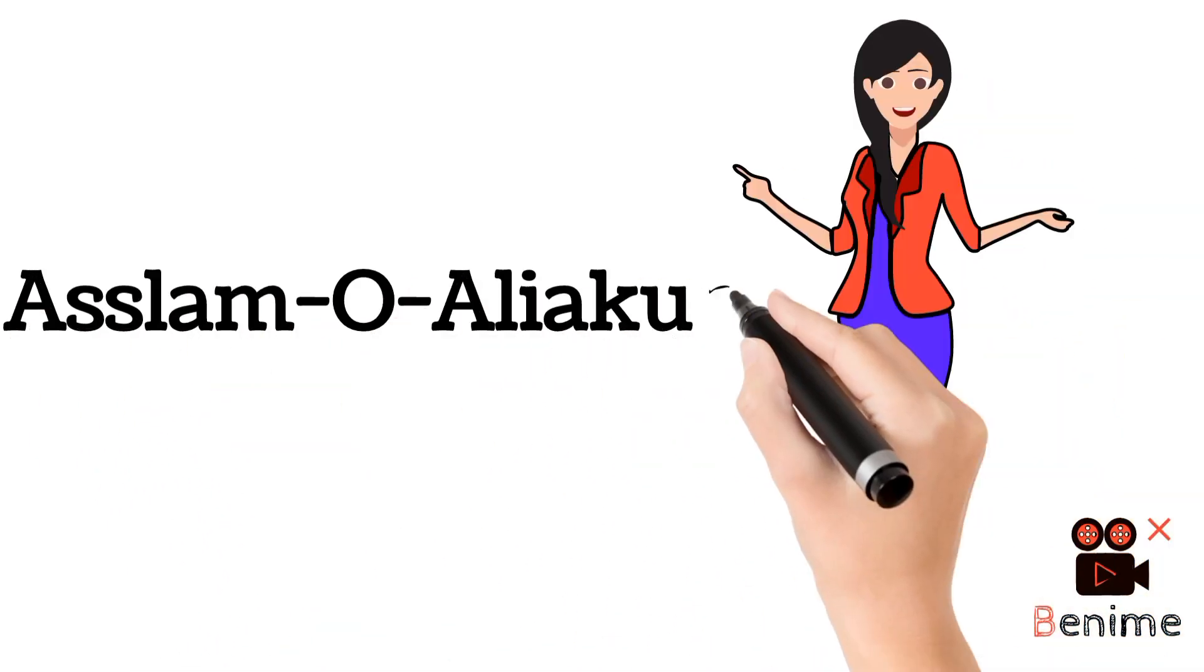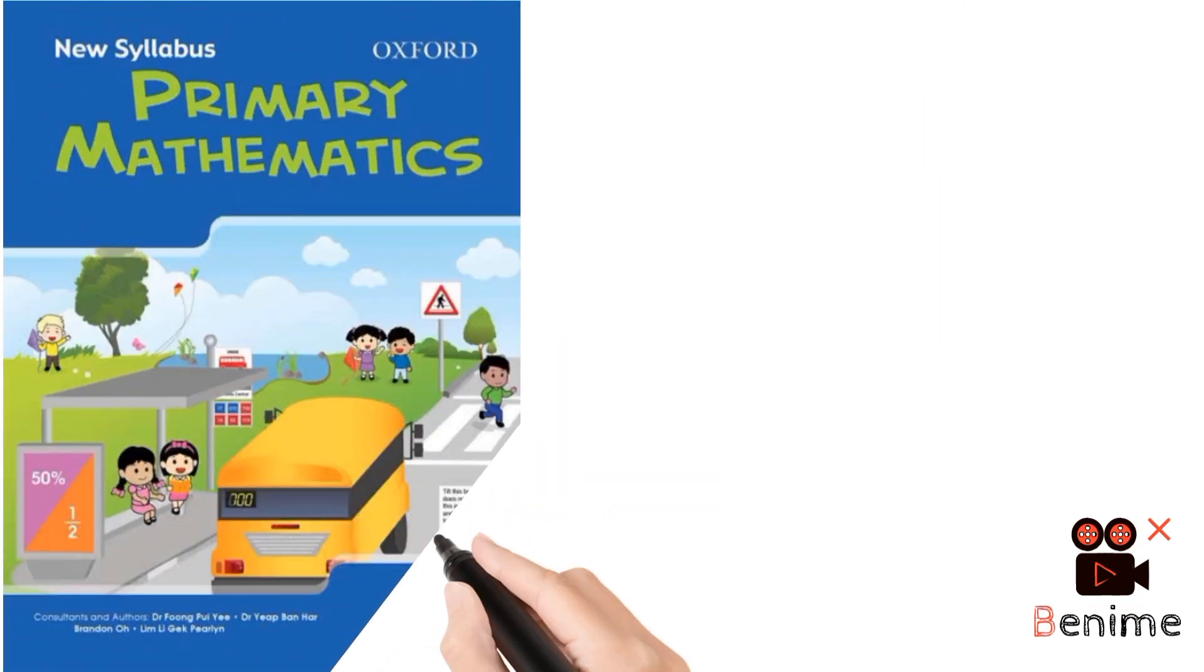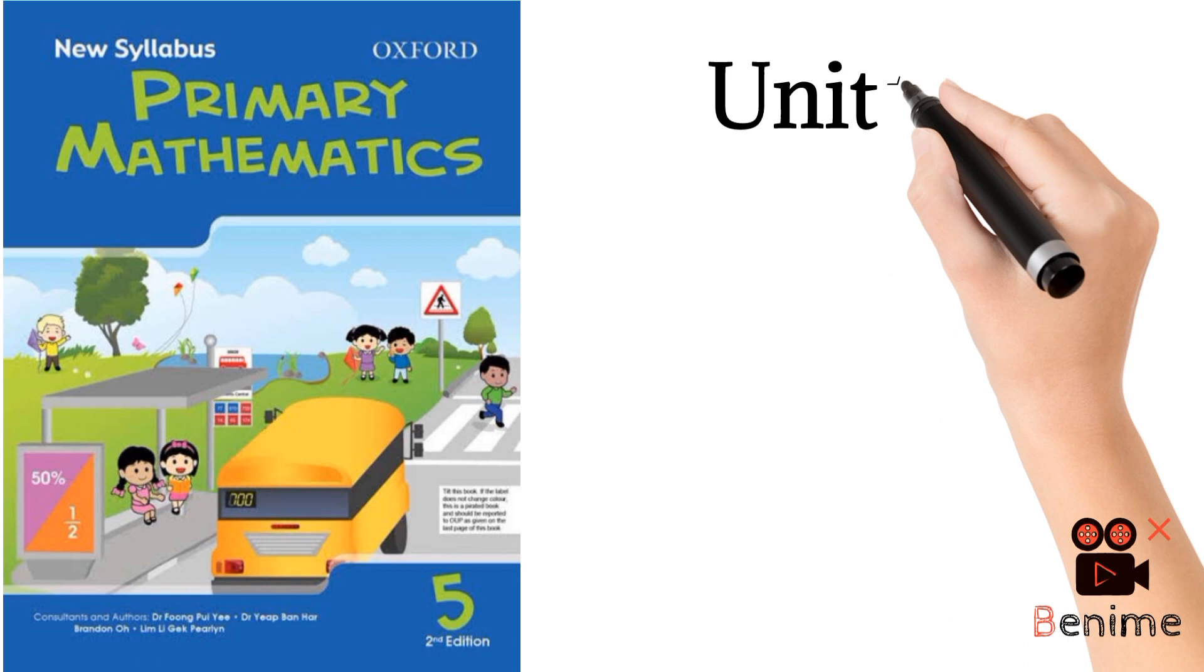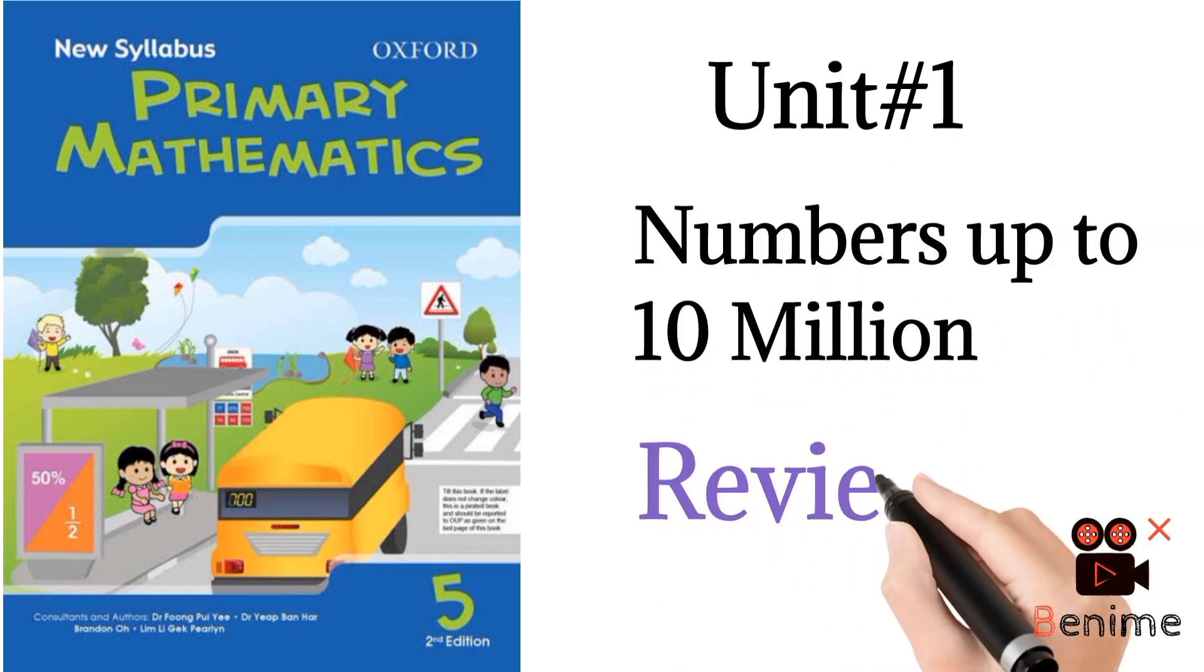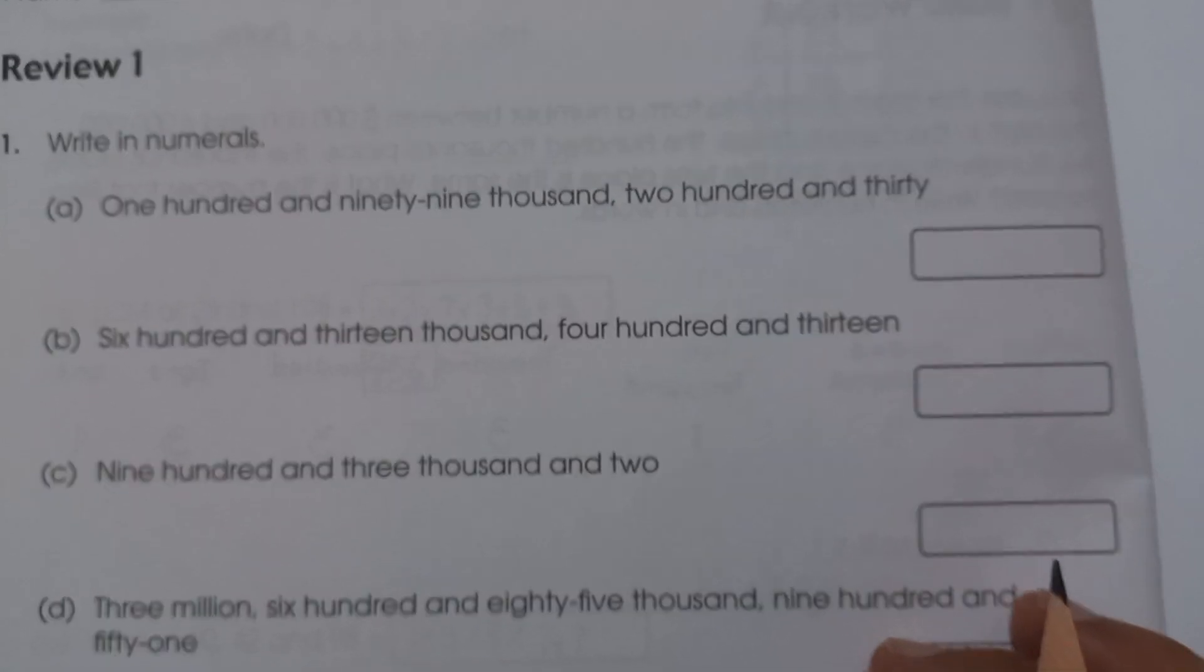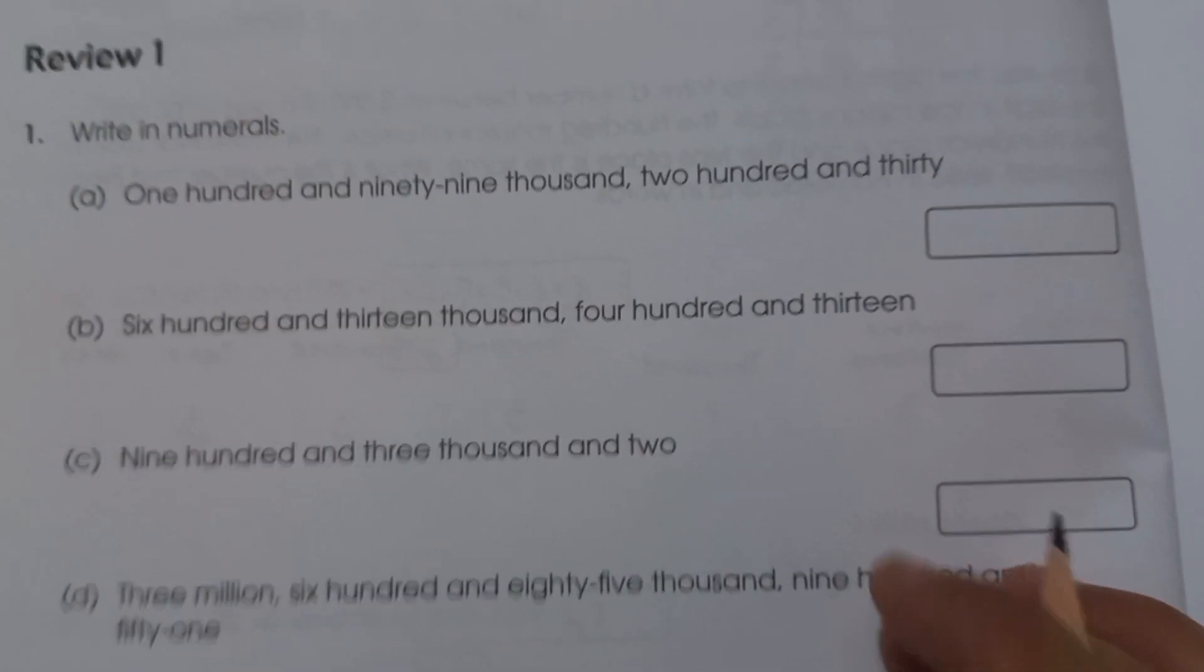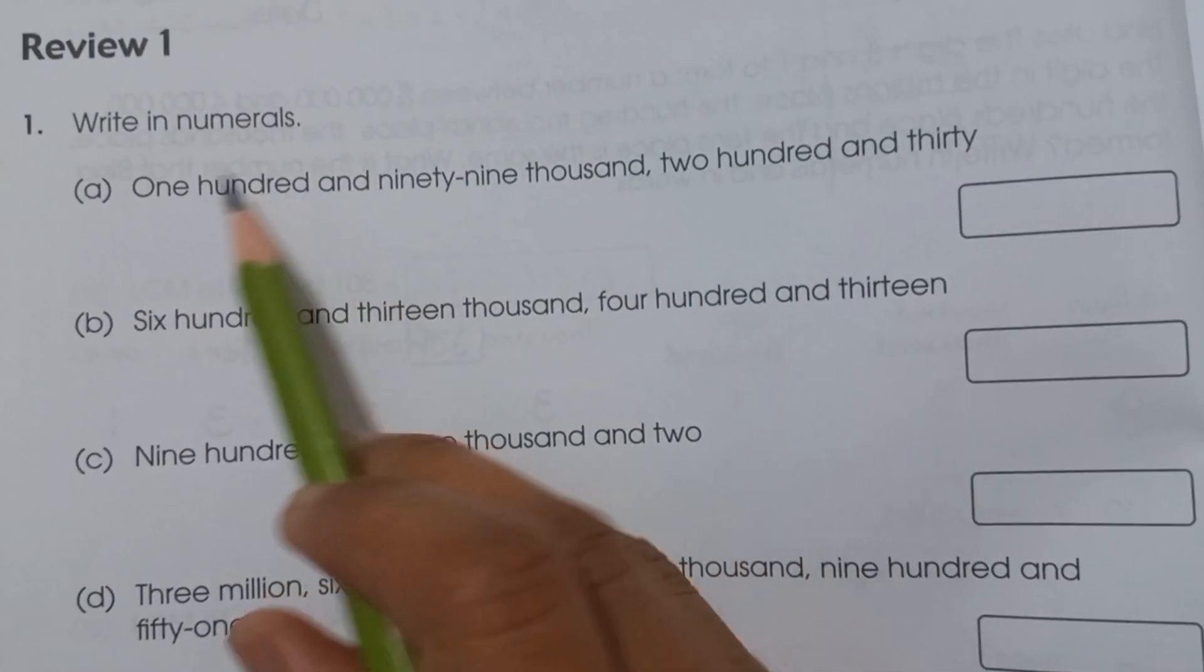Assalamualaikum students, hope you are fine. Today we are going to solve Unit Number 1, its name is Numbers up to 10 Million, Review 1. Students, open to page number 12, question number 1: write in numerals. We have done numerals before in this review.